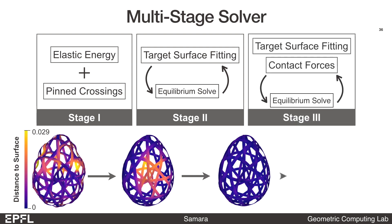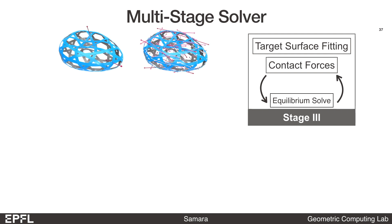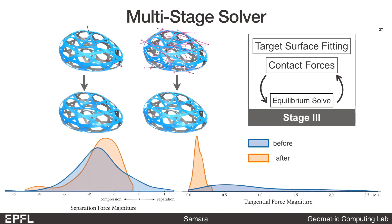Even though the magnitude of the changes to the design parameters is small, stage 3 can play an important role in finding a stable structure. In this example, all separation forces are removed, and the tangential forces are significantly reduced.